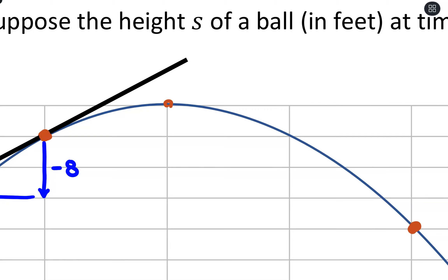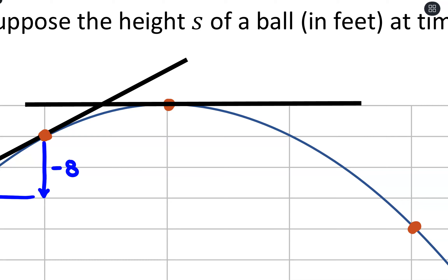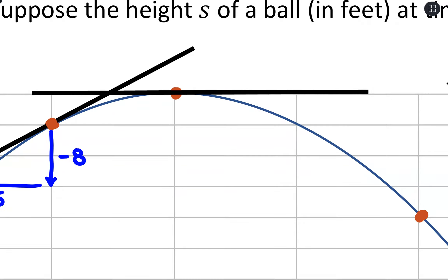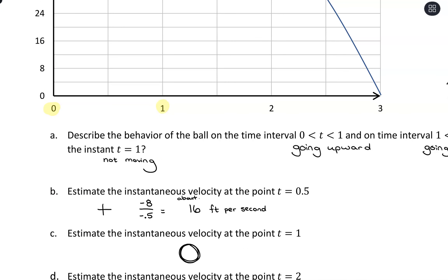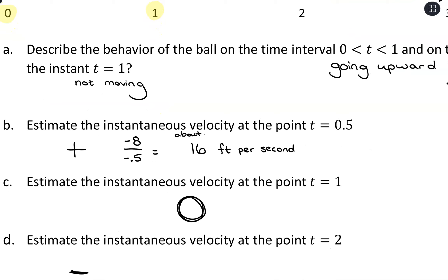At t equals 1, because it's a maximum point, the tangent line is horizontal — exactly flat. A horizontal line has a slope of 0. So when we reach peaks (maximum values) or valleys (minimum values), the tangent lines are horizontal and the slope of the tangent line is 0. That's the visual explanation for why we get 0 at t equals 1.